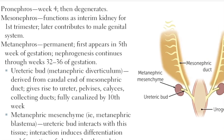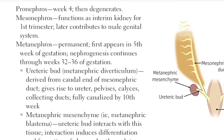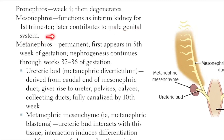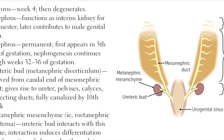The mesonephros, which is the structure in the yellow, functions as the intermediate kidney, or the interim kidney, for the first trimester — that is the first three months. The mesonephros later contributes to the male genital system, specifically the vas deferens. It does not contribute to the kidney.